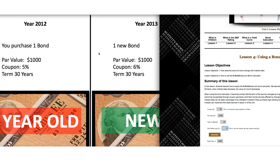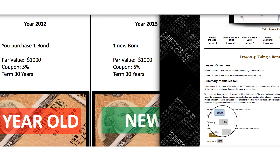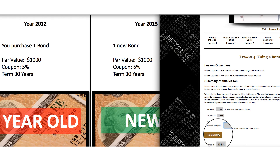Let's look at another scenario. We still bought the same bond in 2012 with a 5% coupon, but instead of newly issued bonds in 2013 being at 4%, let's say interest rates went up to 6%. Our coupon and par value are still the same, and we still say there are 29 years left. The interest rate is now 6%. The bond price went down below par value — it's only worth $864. As interest rates rise, if you bought a bond at a low interest rate and rates rise, that bond becomes worth less.